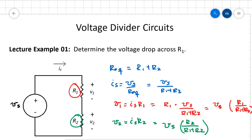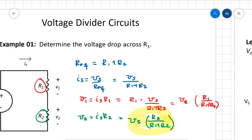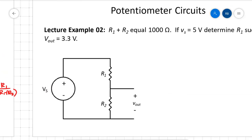Even though this is a voltage divider equation, I typically never remember this equation. I just know that the voltage drop across V1 is R1 divided by the total resistance, R1 plus R2, multiplied by the total voltage drop.